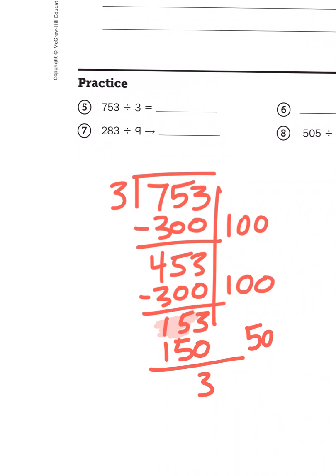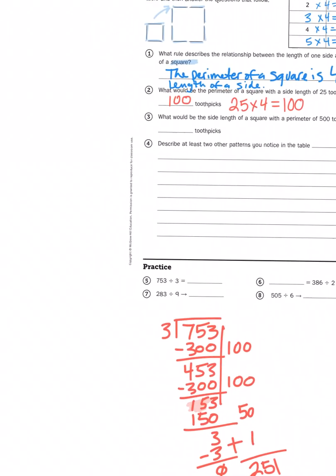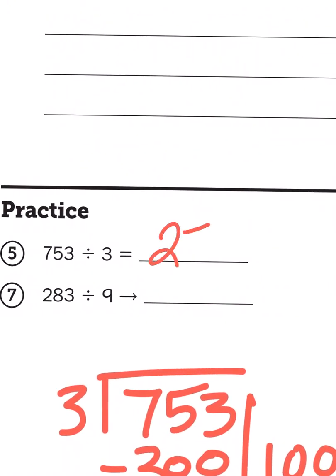And then when I subtract, I'm left with just one more 3. How many more 3's can I get out of 3? Well, that would be 1, because 3 times 1 is 3. So now I have all these partial quotients laying around. I just need to add them all together. 100, 200, 250, 251. So that is my quotient, 251.